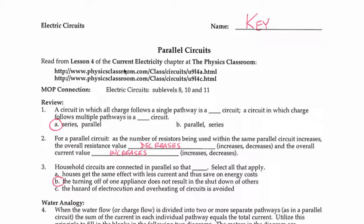Number one, we can see here that a circuit in which all charges follow a single pathway, that would be series. When I have one pathway, it's series. When I have multiple pathways and more options, it is parallel.